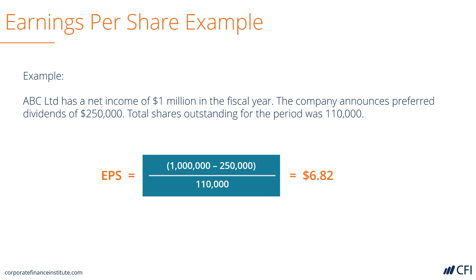So earnings per share is going to be equal to net income minus preferred dividends, divided by weighted average shares, which is $6.82 per share.